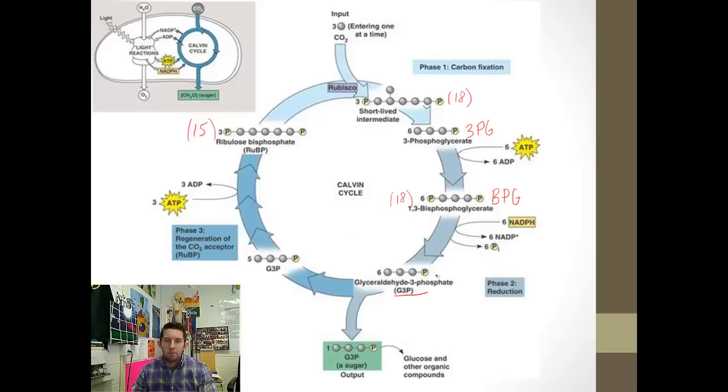It converts BPG to G3P. Not only does it reduce BPG, but it also causes it to lose phosphates, inorganic phosphates here. Now we have G3P. G3P is the main export of this cycle. G3P can become lots of different organic molecules. We're still at 18 carbons because we have six 3-carbon G3Ps.